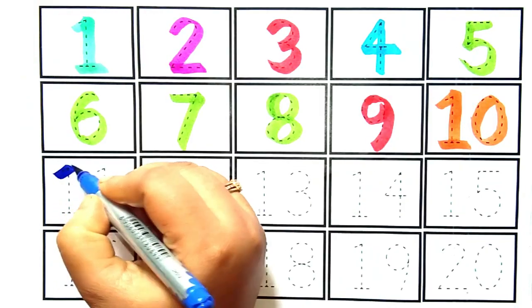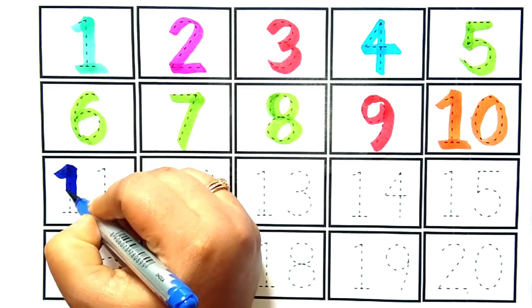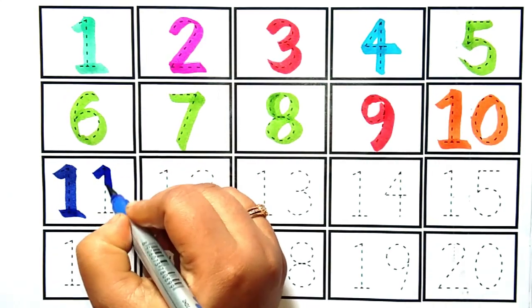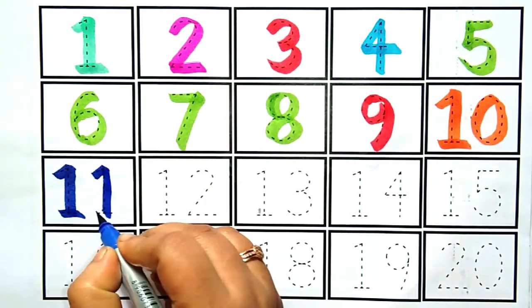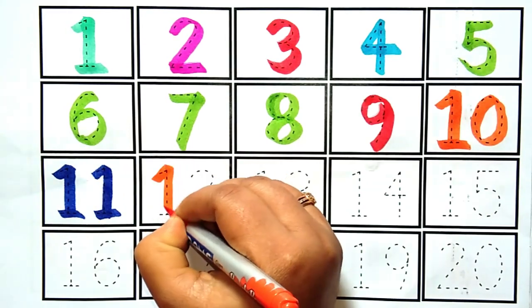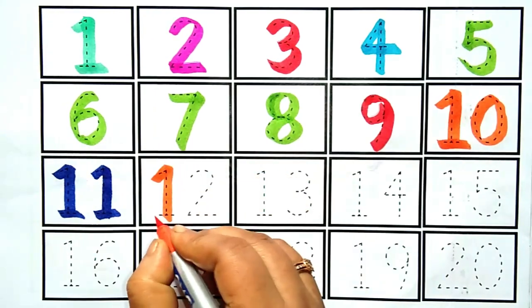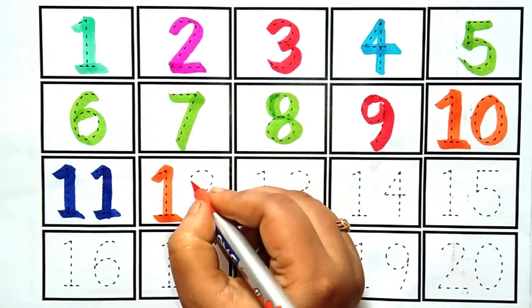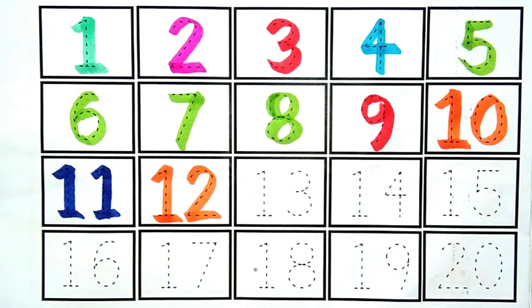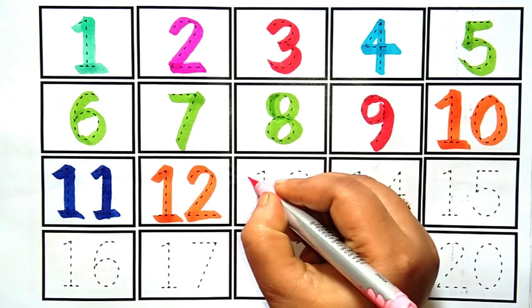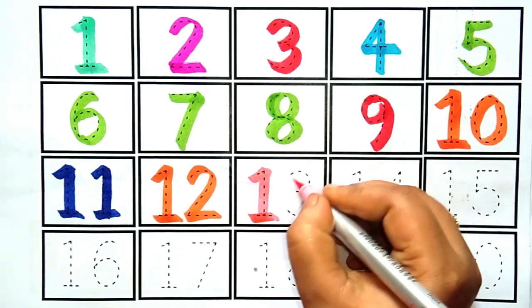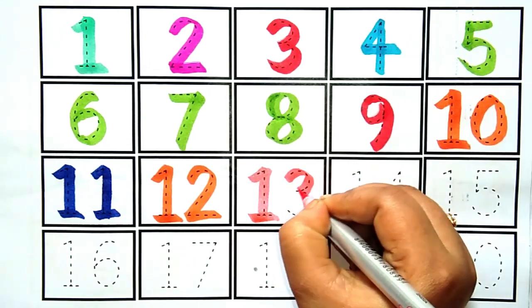11, yeh hai number 11, yeh hai number 11. Twelve, it is number twelve. 13, it is number thirteen.